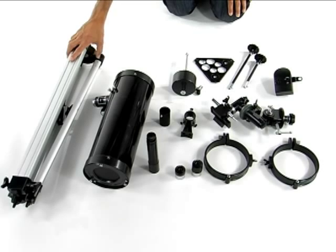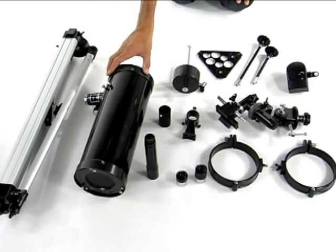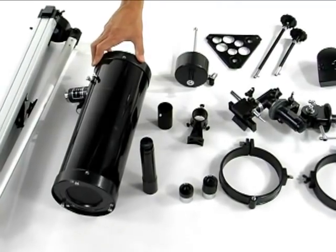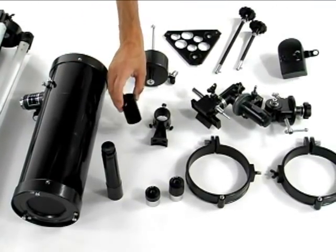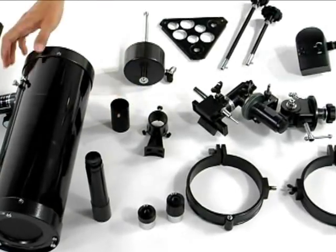This is the tripod for your telescope. This will be the OTA optical tube assembly. This little piece right here is the extender for your tube.